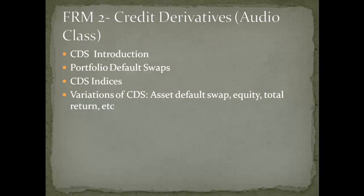Senior baskets and subordinate baskets function differently from previous basket structures. Whereas standard and Nth-to-default basket payoffs are based on the number of defaults, senior and subordinate basket payoffs are a function of cumulative loss level. The senior basket will not receive any compensatory payment until a pre-specified loss level is breached — analogous to insurance proceeds over the deductible in a standard insurance policy. The subordinate basket will receive compensatory payment for cumulative losses below the pre-specified loss level, representing the deductible in a standard insurance contract.